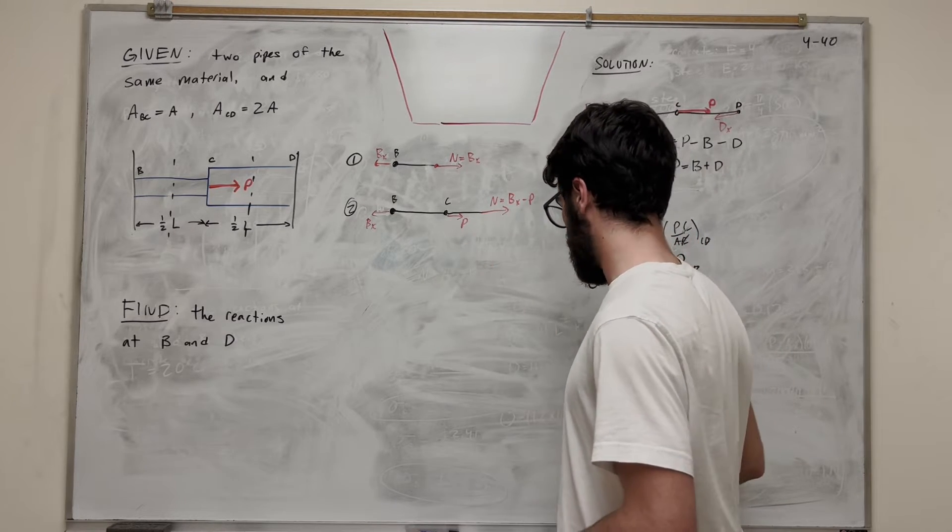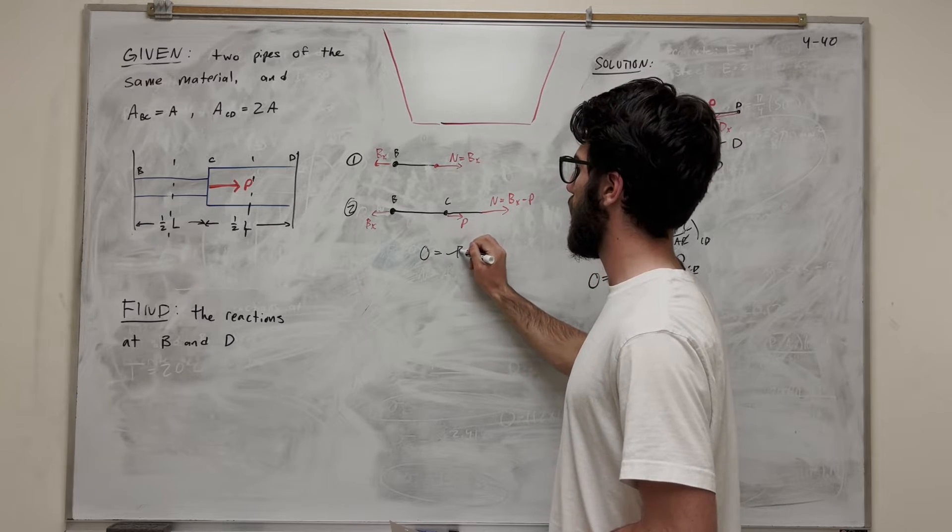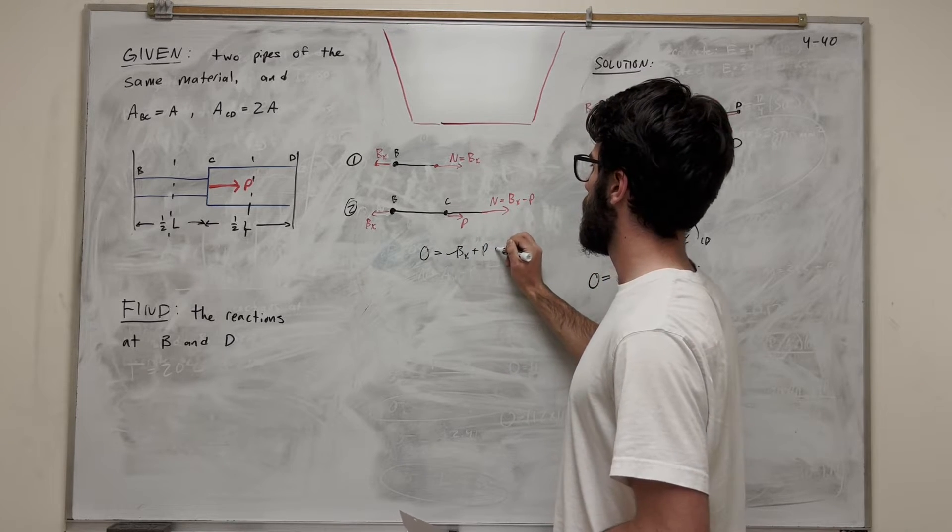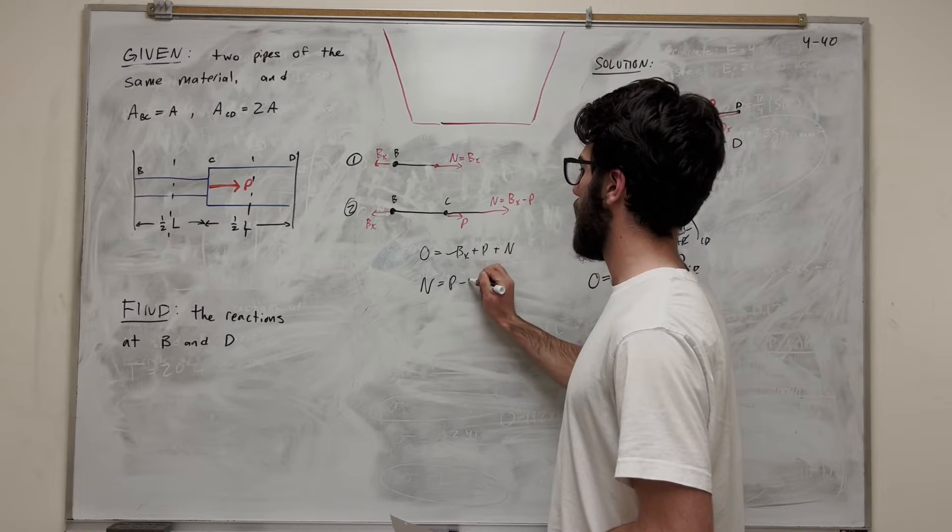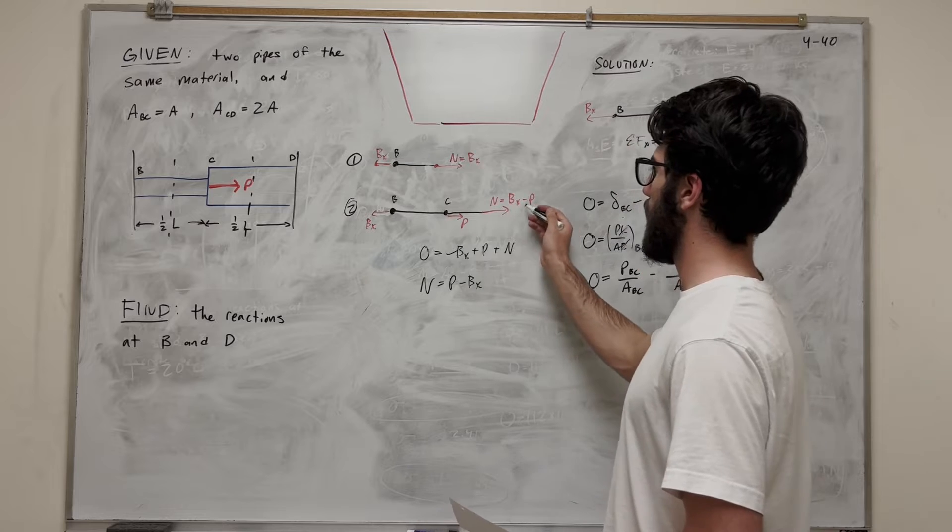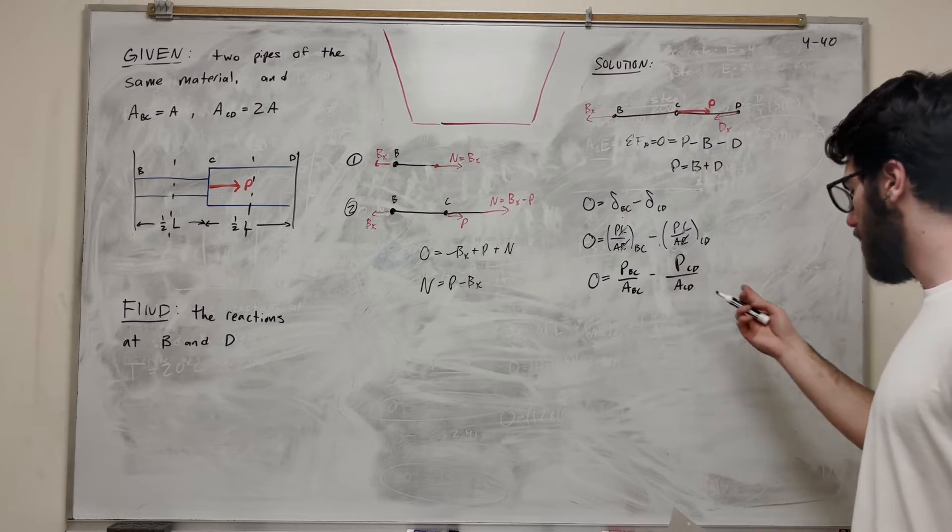You can use sum of the forces in the X to see that. Let's add the sum of the forces in the X. We know it's equal to zero. So it's going to be minus B of X plus P plus normal. And you get that normal is equal to P minus B of X. Or B of X minus P. So that's how I got that. Cool. So that's what's going to be plugged in for P here.